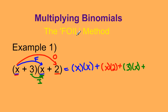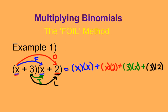The last letter in FOIL is L, which stands for last. So I'm going to look at the last two terms — the last term in the first binomial multiplied by the last term in the second binomial. That's my L: 3 times 2. Computing all four: x times x is x squared, x times 2 is 2x, 3 times x is 3x, and 3 times 2 is 6.